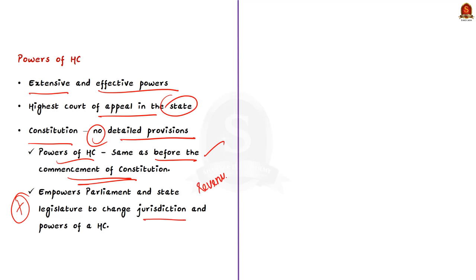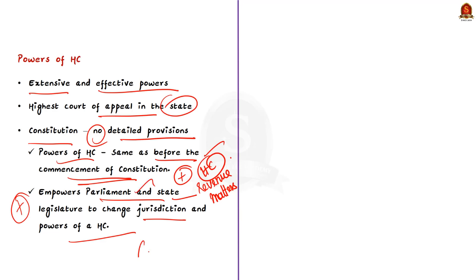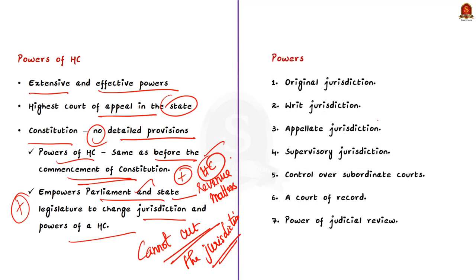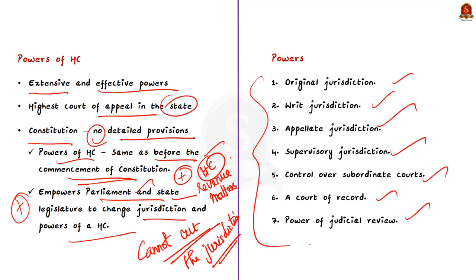The Constitution empowers Parliament and the state legislature to change the jurisdiction and powers of a High Court, but they cannot cut the powers and jurisdiction guaranteed by the Constitution. At present, the High Court enjoys original jurisdiction, writ jurisdiction, appellate jurisdiction, supervisory jurisdiction, control over subordinate courts, it is a court of record, and it also enjoys the power of judicial review.